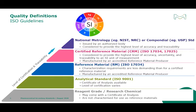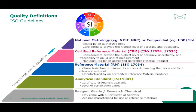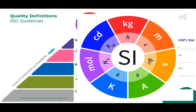When talking about reference materials or certified reference materials (CRMs), these products must be produced by a company or institution certified according to ISO 17034, and quality control for CRMs requires ISO 17025 certification. These materials are manufactured by an accredited reference material producer. CRMs are considered to provide the highest level of accuracy, uncertainty, and traceability to an SI unit of measurement. At the top of the pyramid are the national metrology institutes or compendial authorities, which produce primary standards having the highest level of accuracy and traceability.